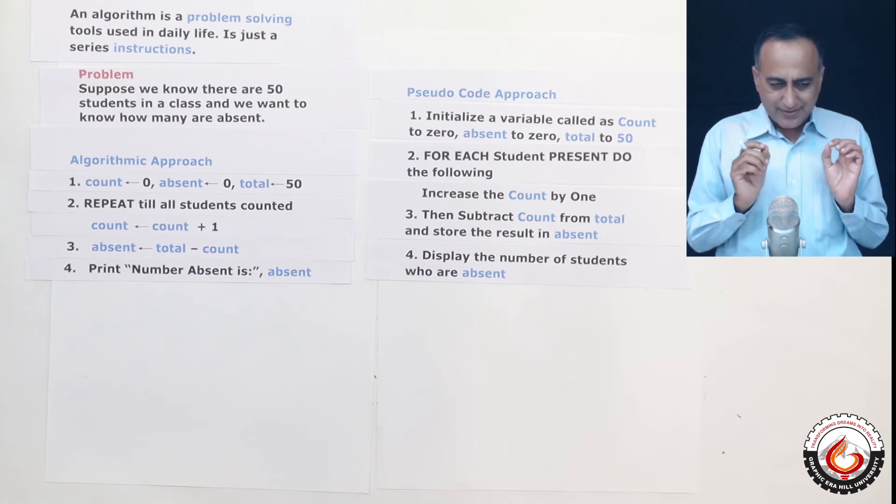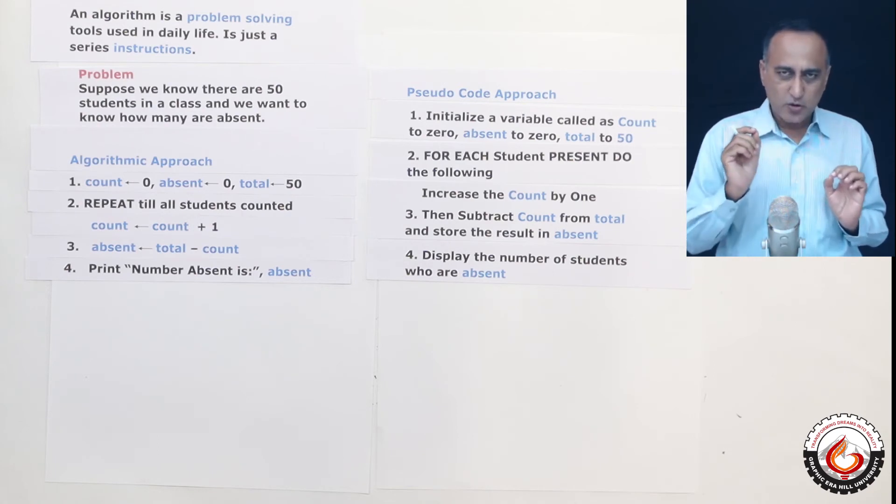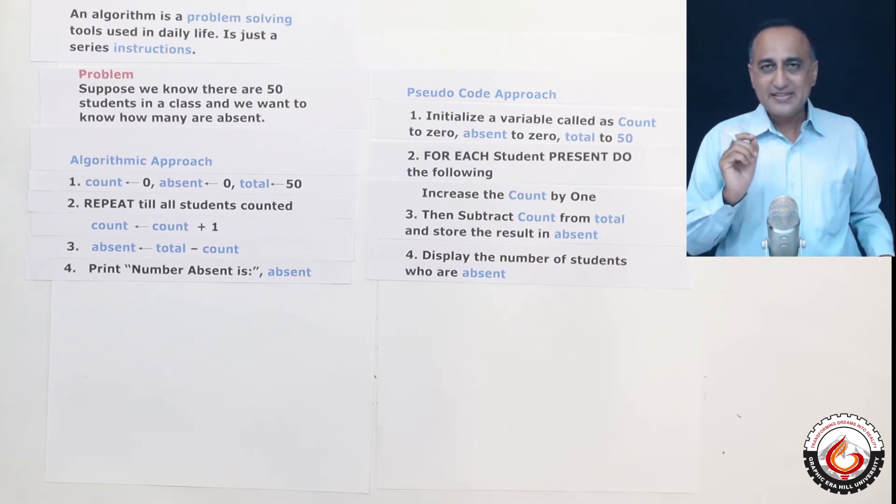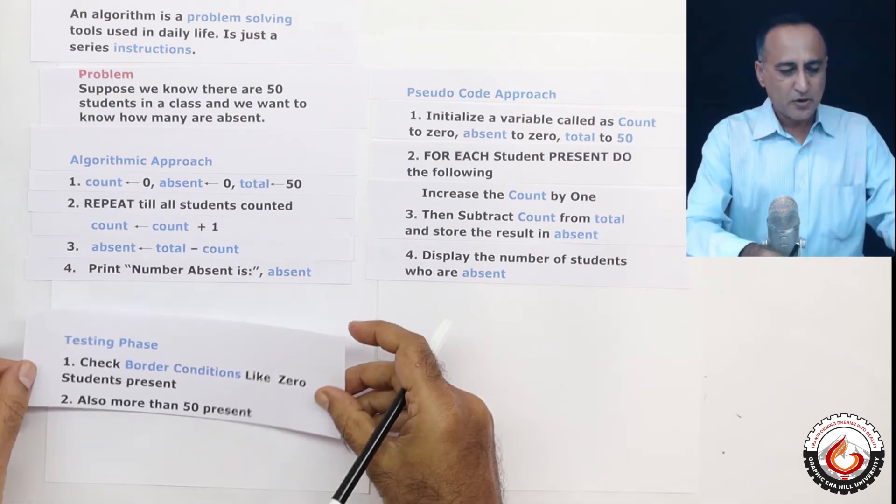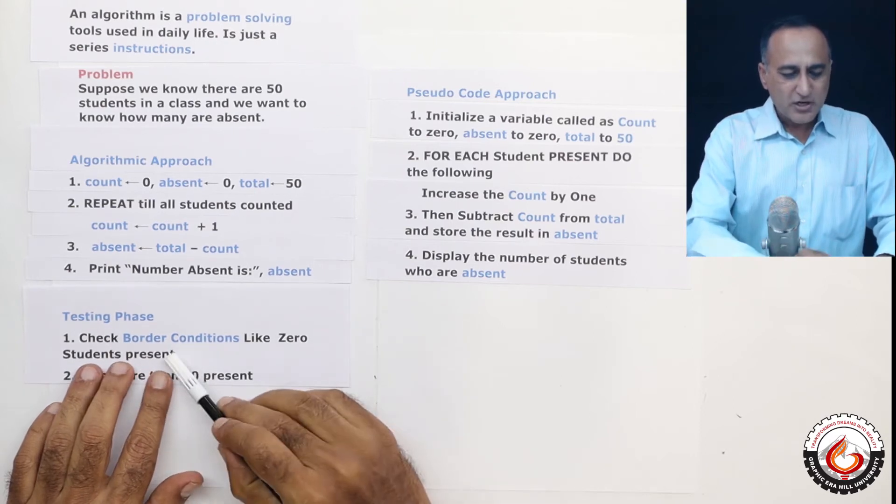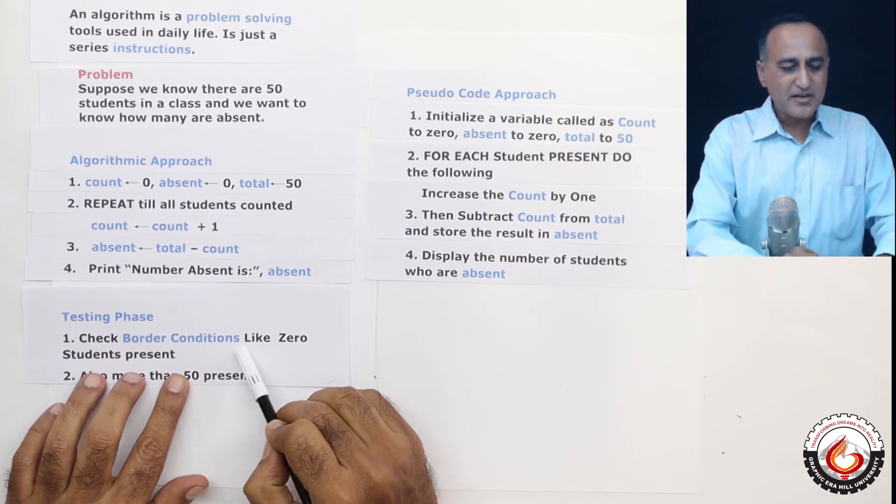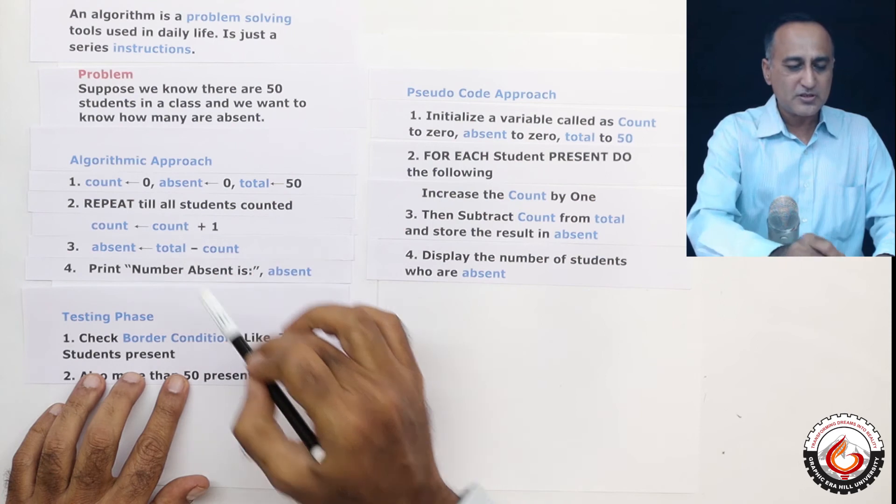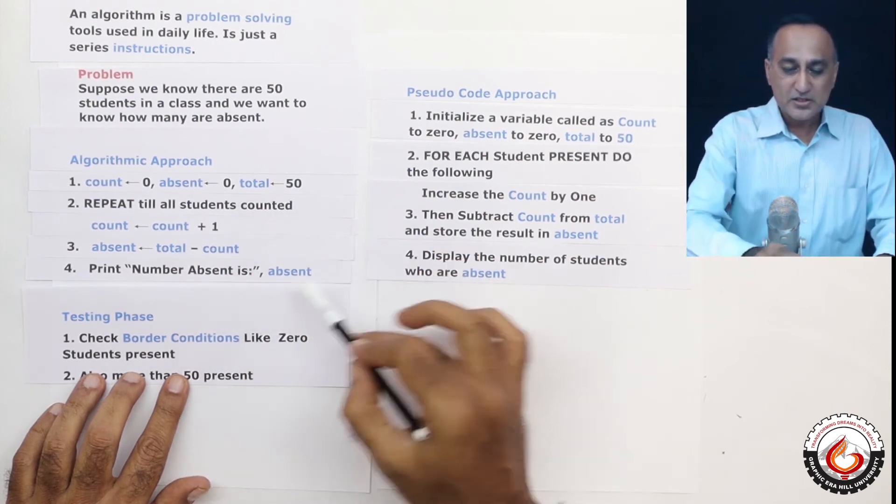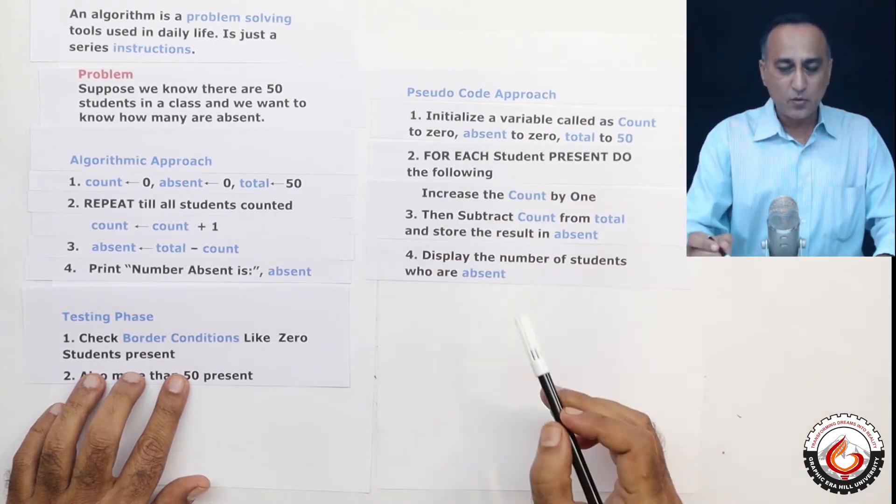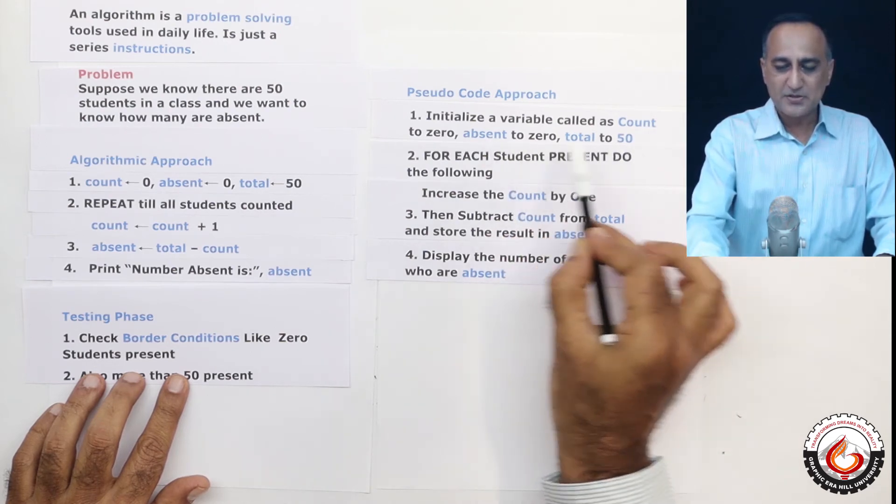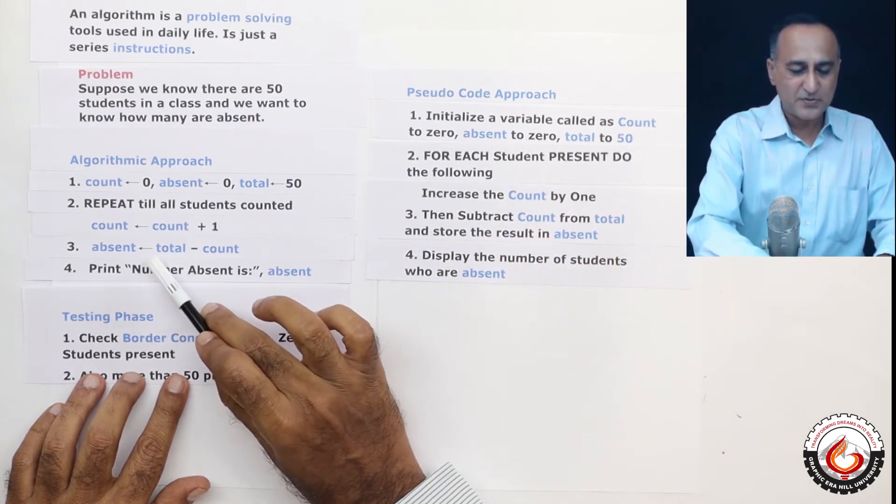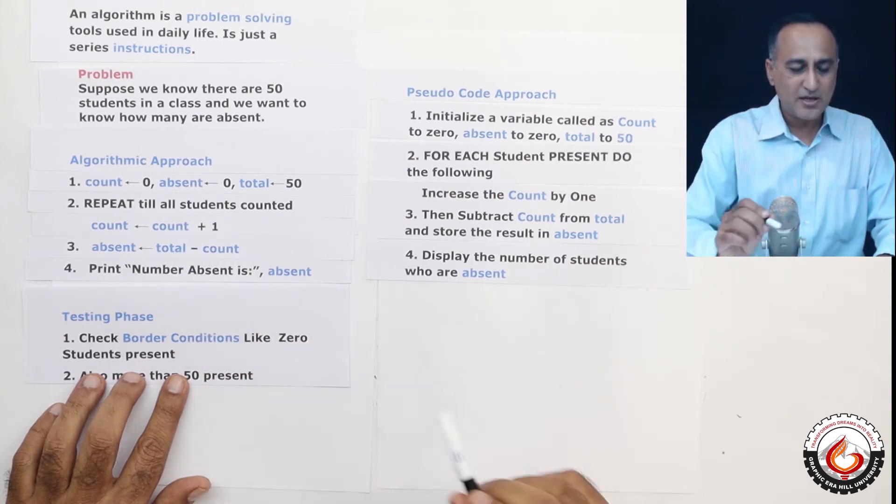Now, whenever you write the logic, whether it's a pseudocode or an algorithmic approach, it is important that you test it. In testing, you should check for border conditions. Border conditions like, suppose the class was empty, will this logic work? Perfectly, it will work because it will show count as zero and total is 50. So it will say absent as 50. Here, if you see, absent is 50 minus zero is going to be 50.